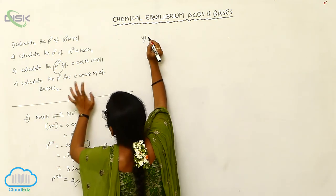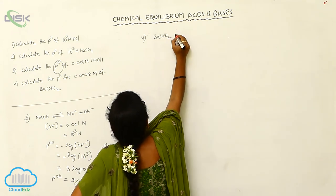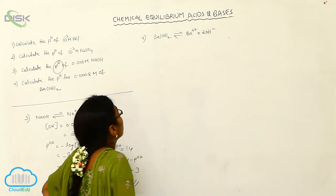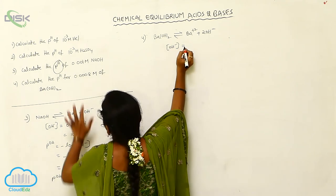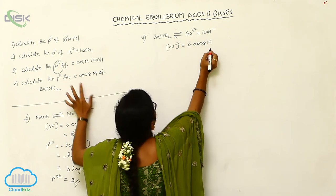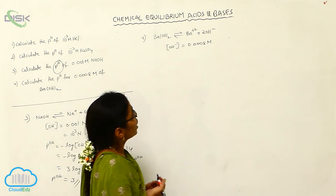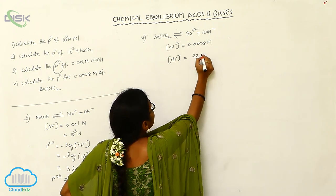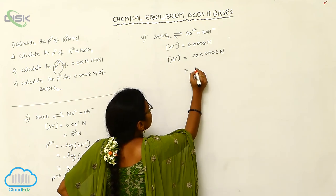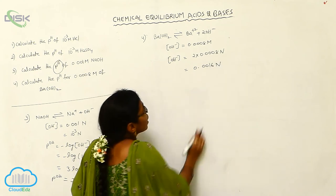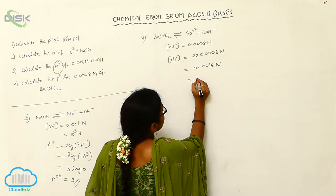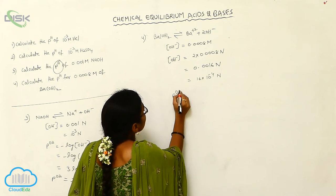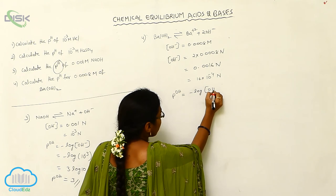Problem 4: calculate the pH of Ba(OH)₂. Ba(OH)₂ dissociates into Ba²⁺ and 2OH⁻. Normally the OH⁻ concentration given is 0.0008 M. The valency here equals 2, so [OH⁻] = 2 × 0.0008 = 0.0016 N = 16 × 10⁻⁴ N. For the calculation, pOH = −log[OH⁻] = −log(16 × 10⁻⁴).